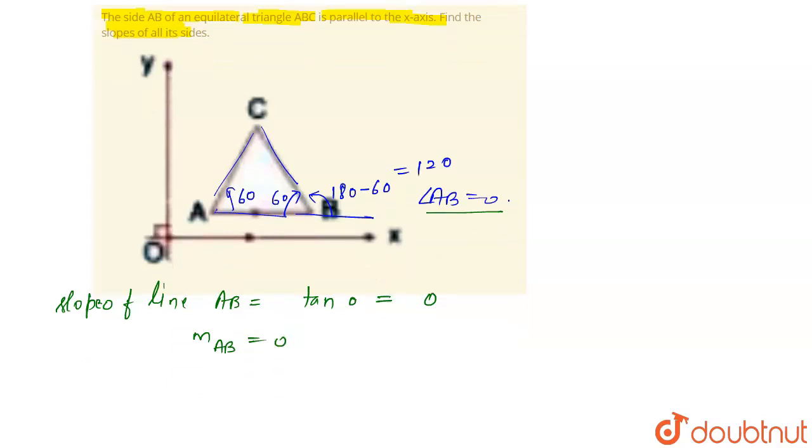Now we will calculate slope of line AC. Let us denote it by M AC is equal to, angle made by AC with X axis is tan 60 degree and we know tan 60 is root 3. So slope of AC is root 3.